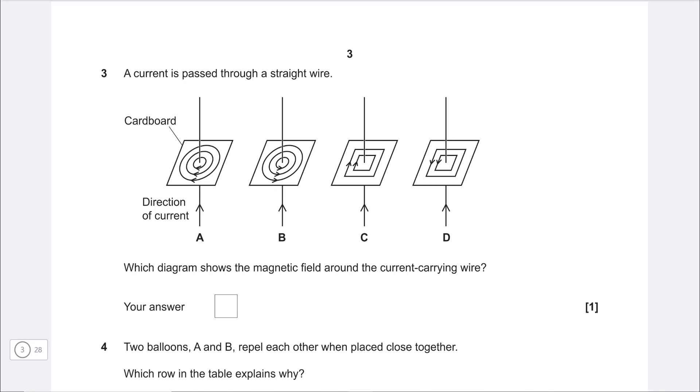Next one. A current is passed through a straight wire. Which diagram shows the magnetic field around the current carrying wire? So first of all, the field will be circular and this means that we can immediately discount C and D that have this strange rectangular field.